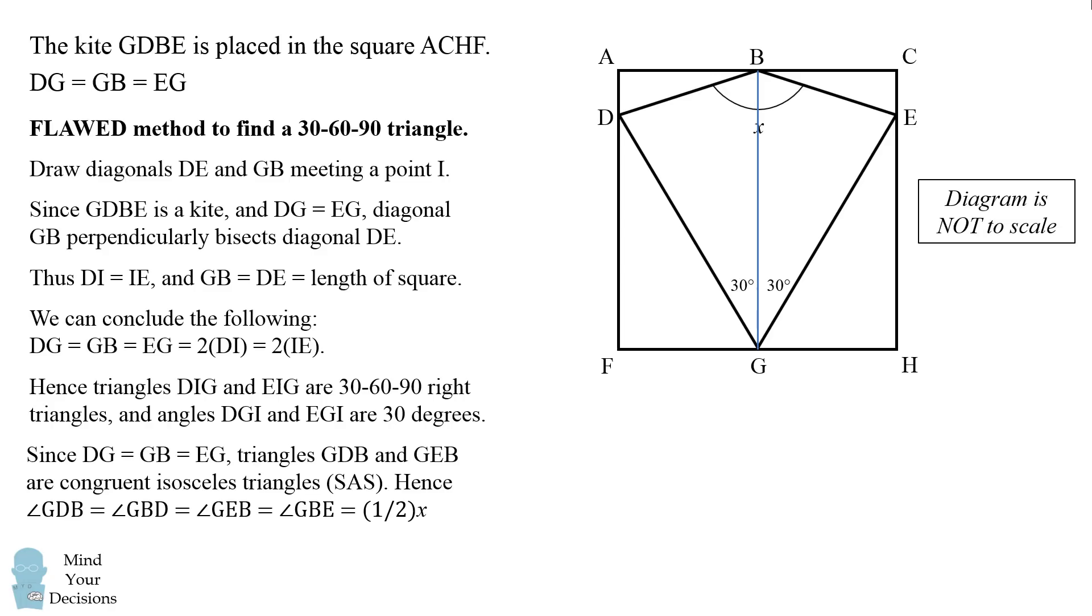Hence, the remaining angles that are not equal to 30 degrees will all be equal to each other and this will bisect angle DBE. So each of these angles will be equal to half of X. Furthermore, we have the sum of the angles in the triangles is 180 degrees.